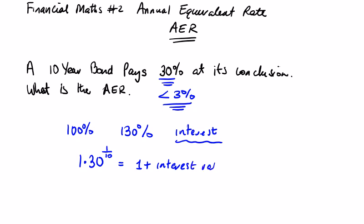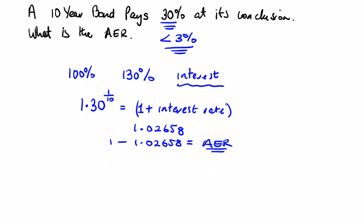So let's have a look at how this works. If you type into your calculator 1.3 to the power of 1 over 10, you're going to get 1.0265, and I'll just round it off to 1.02658. I'll take five decimal places. So what we can say then is 1.02658 minus 1 is equal to the AER. So just to do this visually, you can see it's going to be 2.658% is equal to the AER.